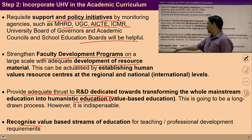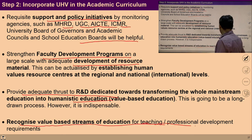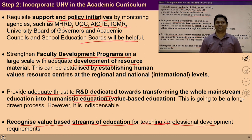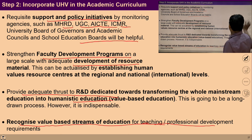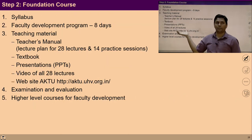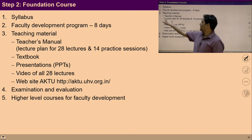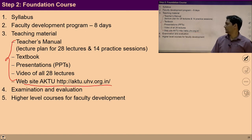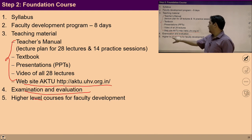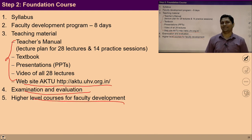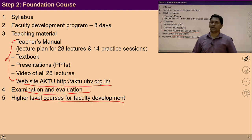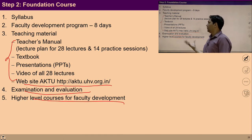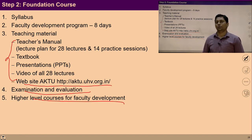Strengthening Faculty Development Programs at a large scale is required so that resource persons may be developed to spread this education everywhere in the nation and at the international level. There is also a need for a trust for R&D dedicated towards transforming the whole mainstream education into a holistic education system. There is a need to recognize value-based streams of education for teaching and professional development. Syllabus design, faculty development programs, teaching materials, textbooks, and exam and evaluation systems are all required at the system level so that everyone gets education that facilitates a harmonious society.